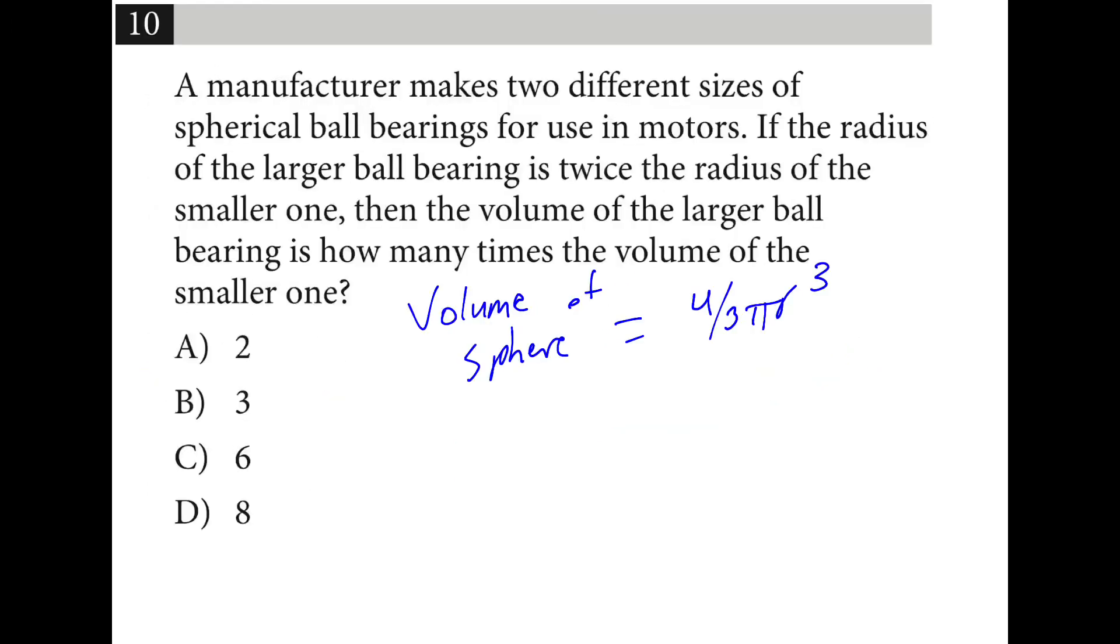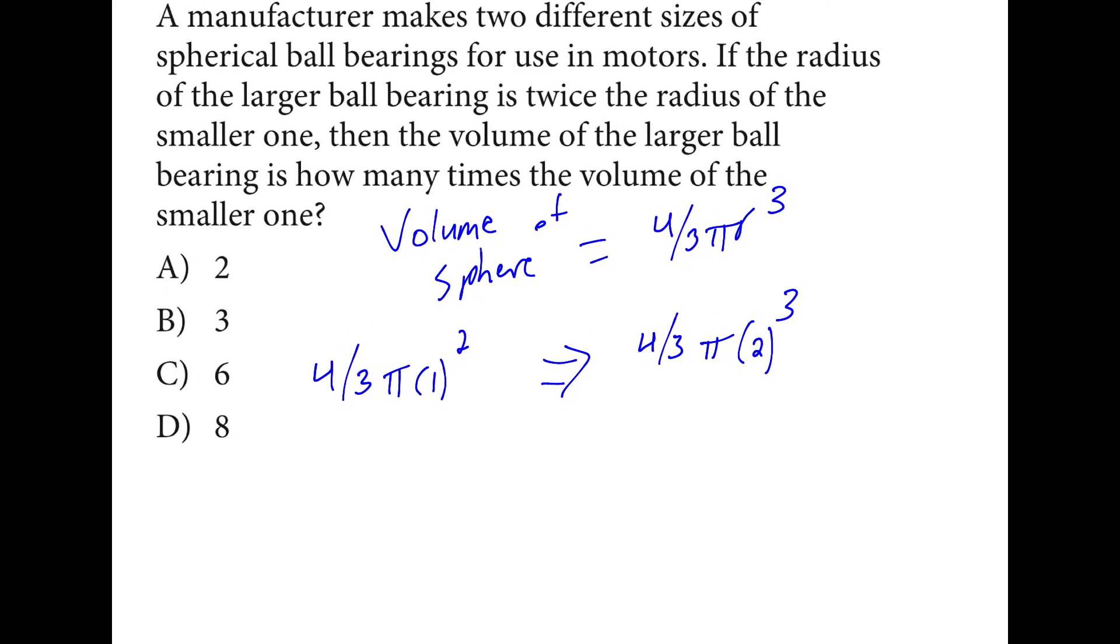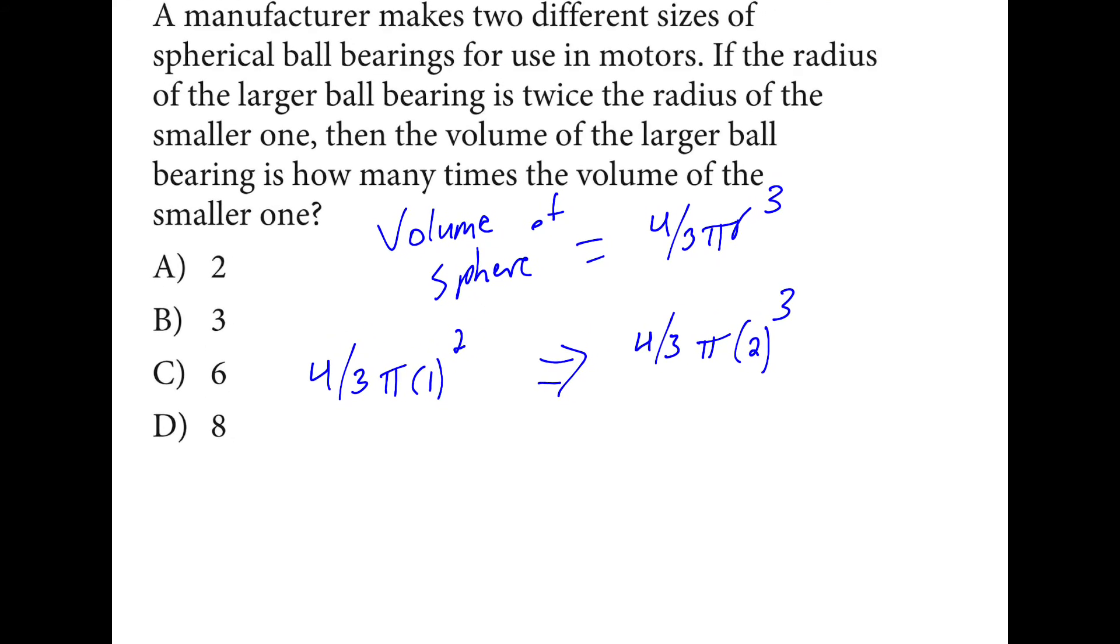On the SAT formula sheet, you see the volume of a sphere is 4 thirds π r cubed. So I'm going to pick two different radiuses here, 1 and 2. And if I take 1 cubed times 4 thirds times π, I get 4 thirds π.